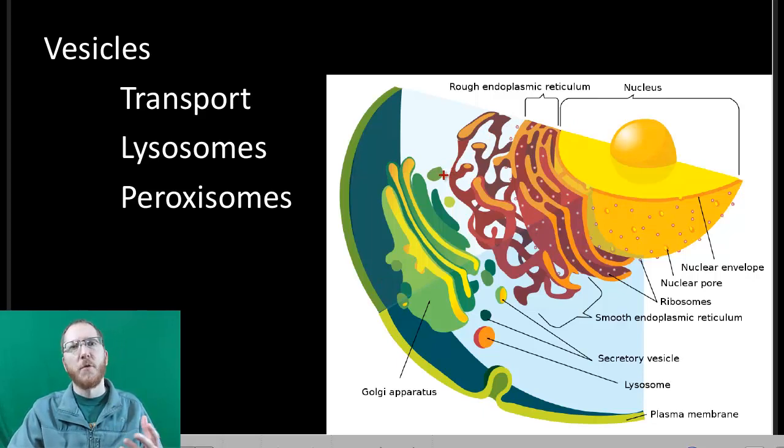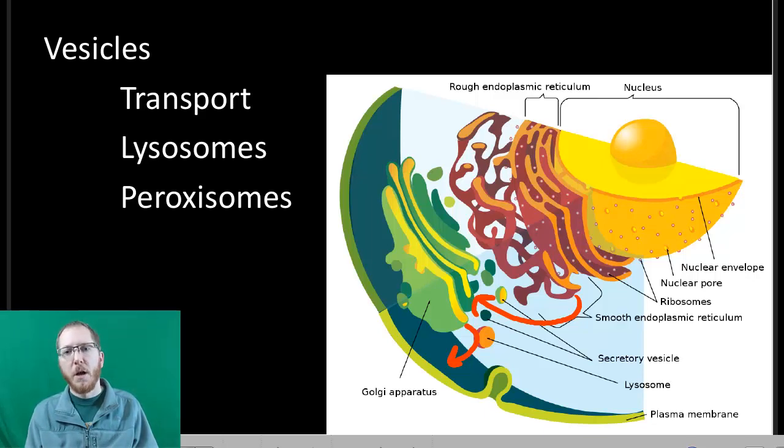Vesicles are one of the simplest of organelles, where it's just a single phospholipid membrane, it's small, and there's just something specific inside. Now, for transport membranes, those guys are just going to go from the ER to the Golgi apparatus, and from the Golgi apparatus to the plasma membrane. Transport vesicles can also take things just from one part of the cell to the other, but in our case, we'll see this is a common route from the ER to the Golgi apparatus to the cell surface.